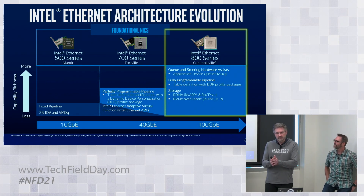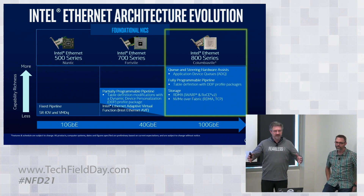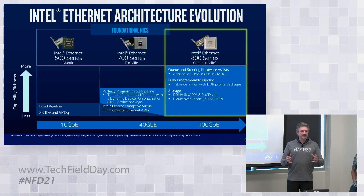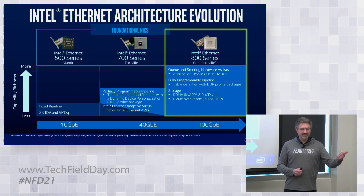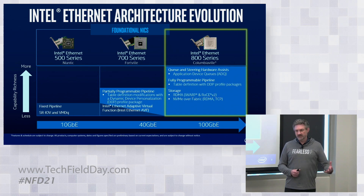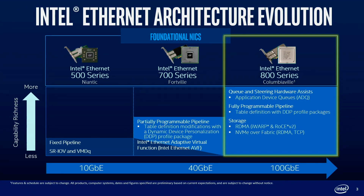I want to start with the evolution of the Intel Ethernet architecture. A lot of people will know the 500 series, also the 82599 or the X520 adapter — previously codenamed Niantic. That 10 gig adapter and controller is everywhere. It was the first thing we offered with extensive SR-IOV and VMDQ support for virtualization, but it was really a hardware ASIC.